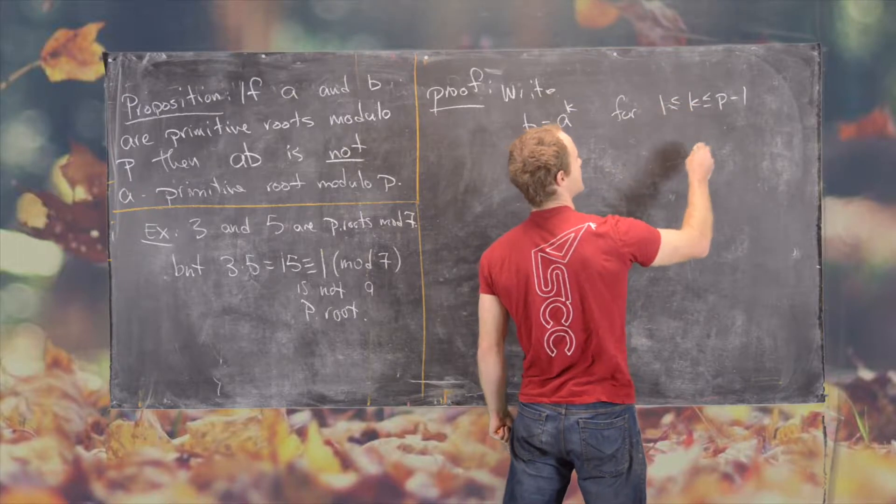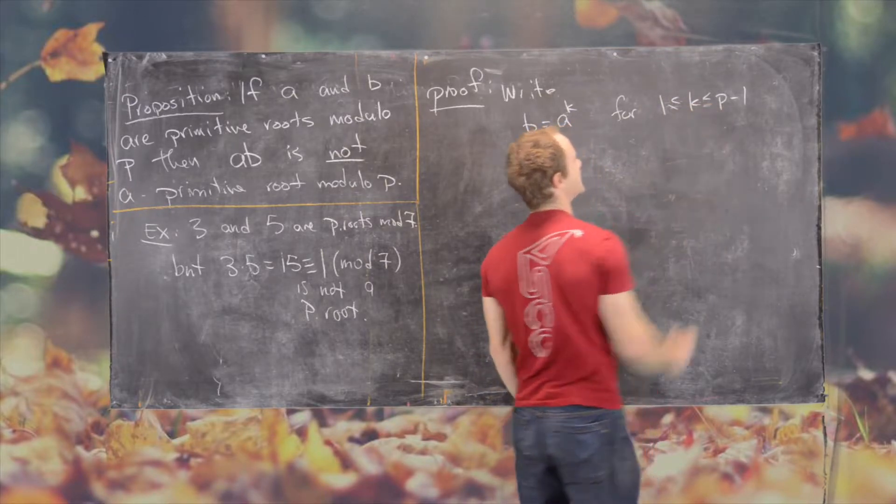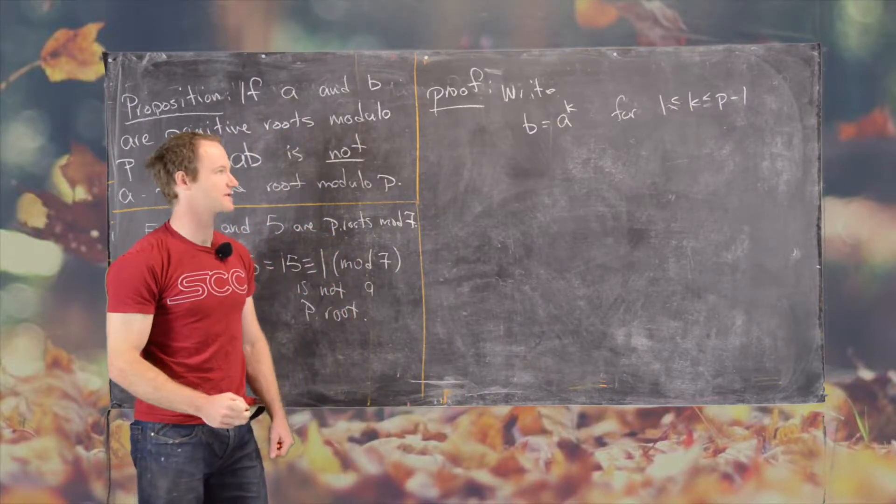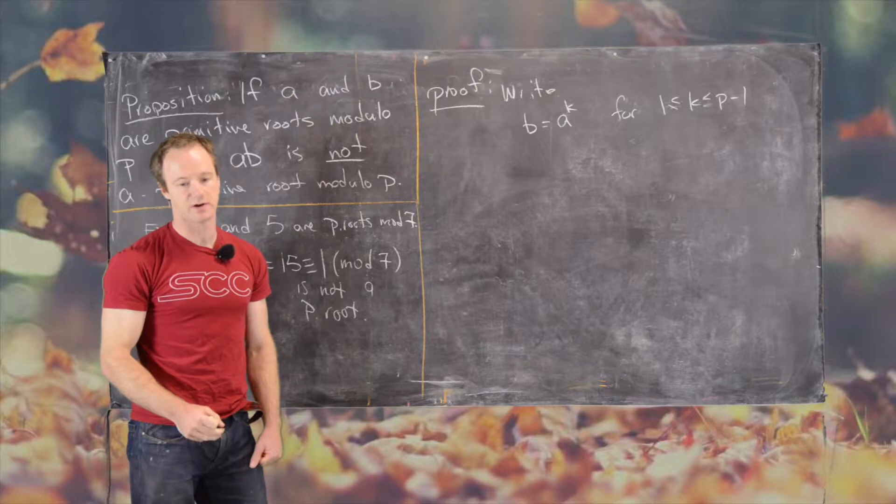We can assume that K is not equal to P minus 1, because that would make B equal to 1 by Fermat's little theorem. But we know that 1 is not a primitive root.